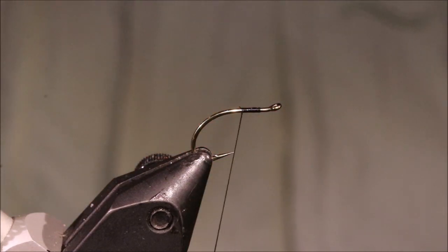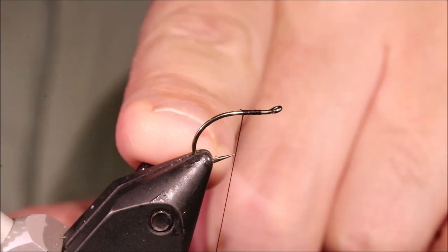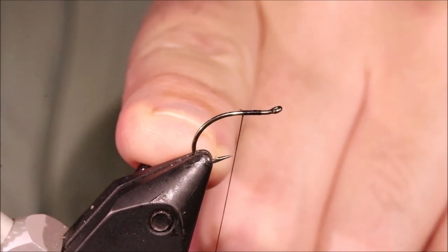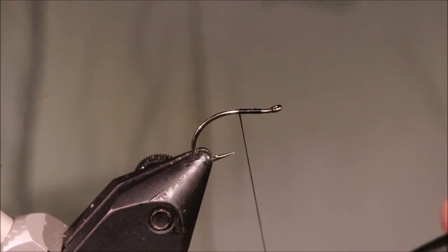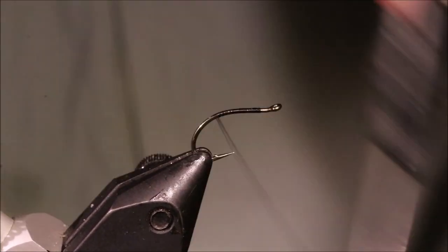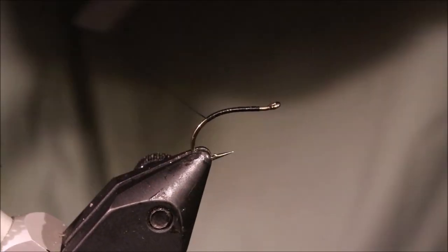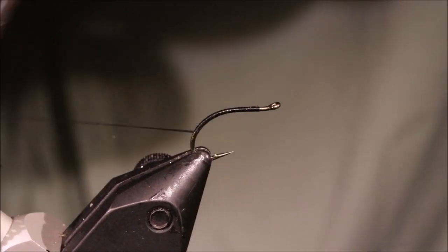So I've got my hook in my vise. This is a Yardzler's Edge style hook, so a Kamasan B420. I believe Stan originally used the Partridge hook but I prefer this. And this is a size 12. Tie these in 10s, 12s, 14s. I'm just running on some uni 8-0 in black.